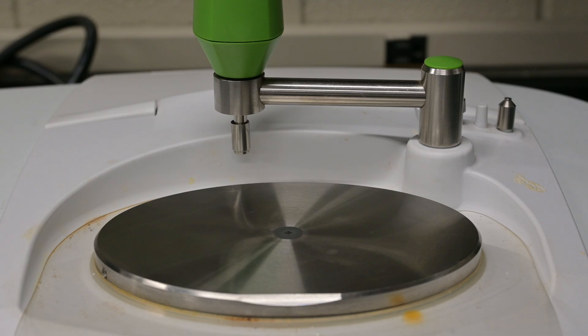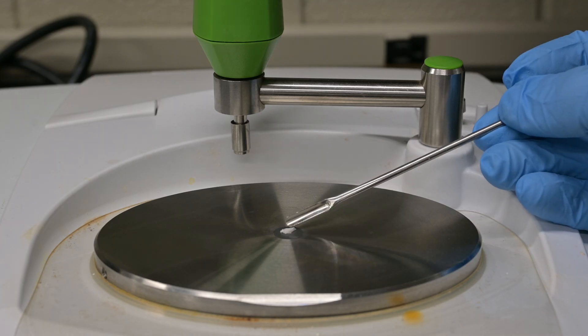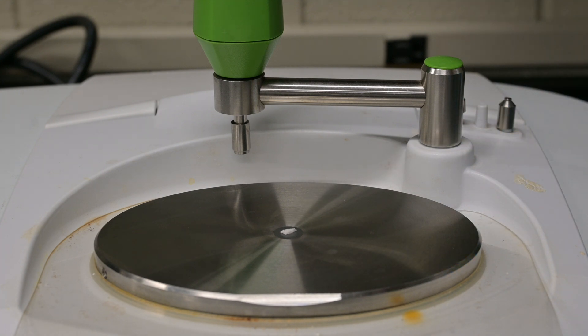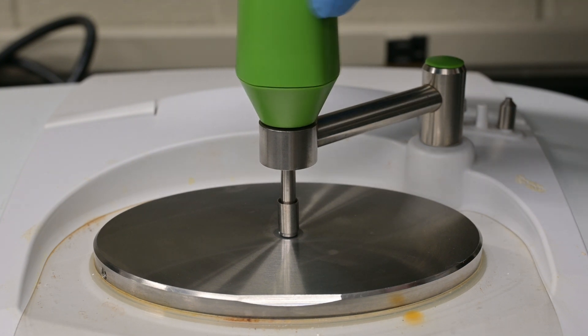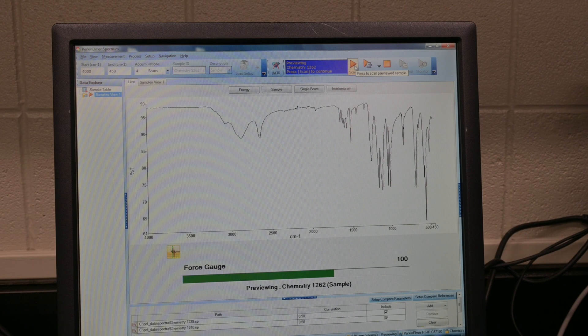To do this, we take a crystal of the sulfanilic acid and place it under the diamond detector. We then use the clamp to force it against the diamond detector so we get good data. We then run a scan.